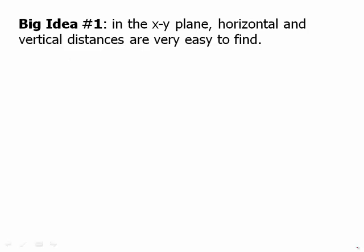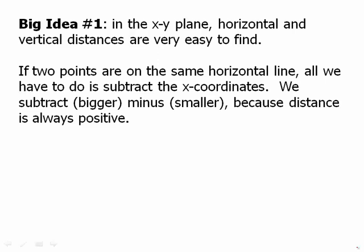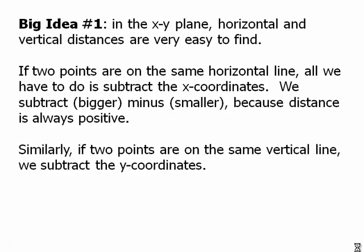Big idea number one: in the x-y plane, horizontal and vertical distances are very easy to find. If two points are on the same horizontal line, all we have to do is subtract the x-coordinates. We subtract bigger minus smaller because distance is always positive. If two points are on the same vertical line, we subtract the y-coordinates. Incredibly easy.